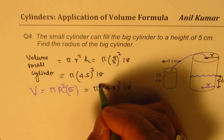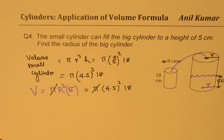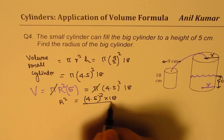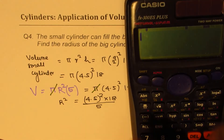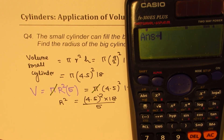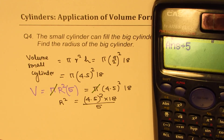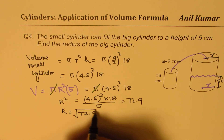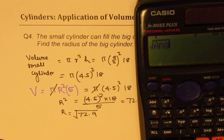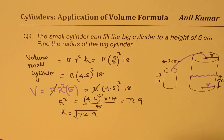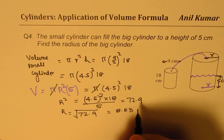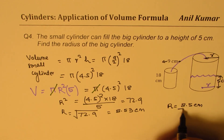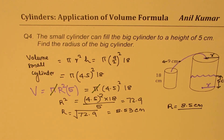Pi and pi cancel. So we get R squared equals 4.5 squared times 18 divided by 5. Calculating 4.5 squared times 18 divided by 5, we get 72.9 in decimals. So R equals the square root of 72.9, which gives 8.53. Rounding to one decimal place, the radius of the big cylinder is 8.5 centimeters.